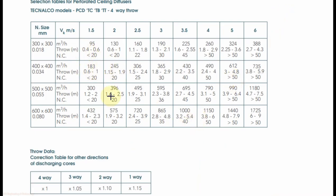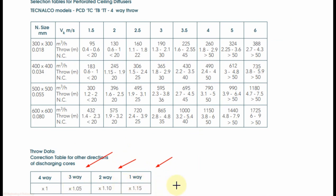The throw data in this table is for the 4-way type. If you need to select for 3-way, 2-way, or 1-way type, you need to multiply the throw by a correction factor. For 3-way type, multiply by 1.05. For 2-way type, multiply the throw by 1.1. For 1-way type, multiply the throw by 1.15.